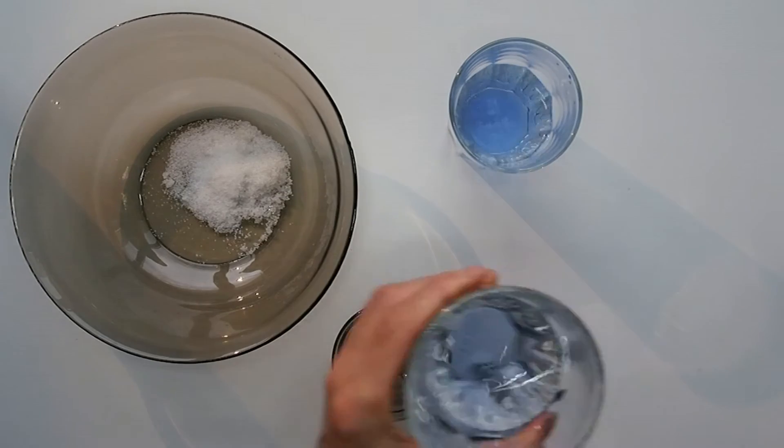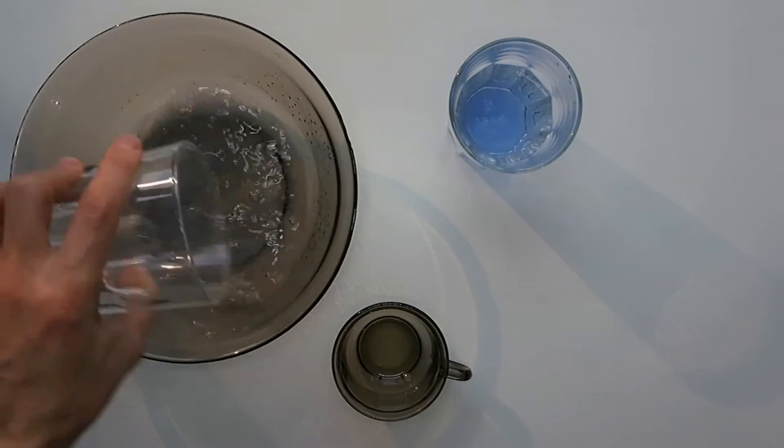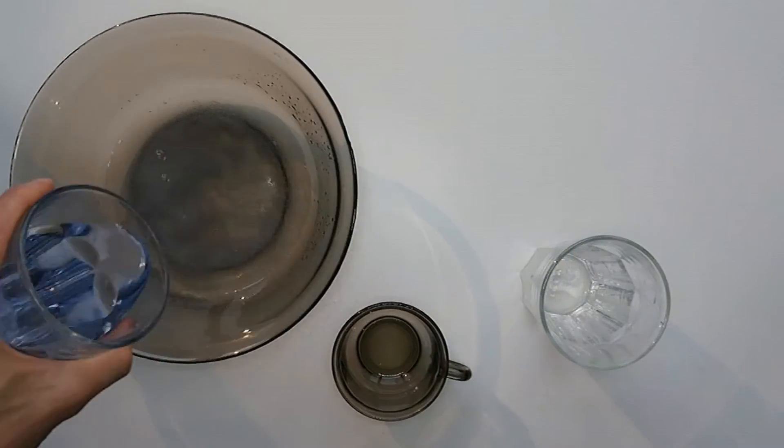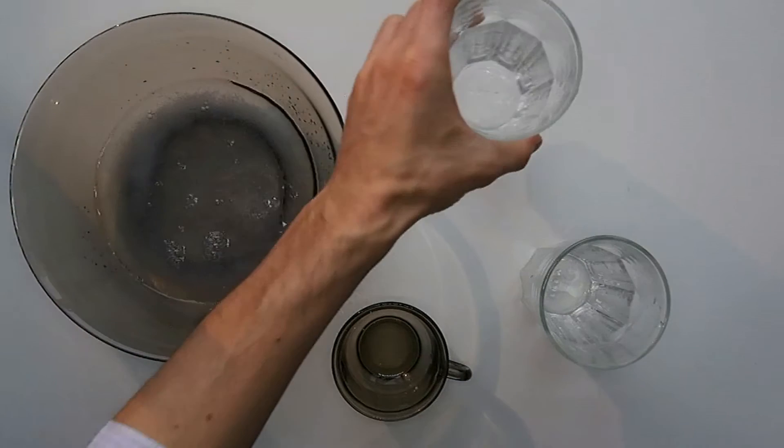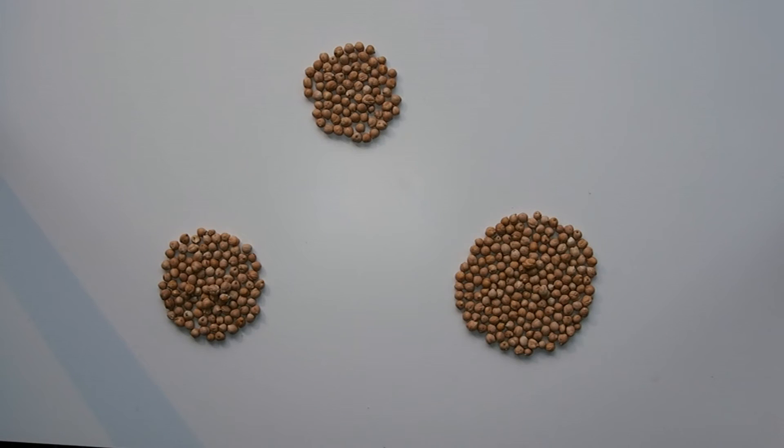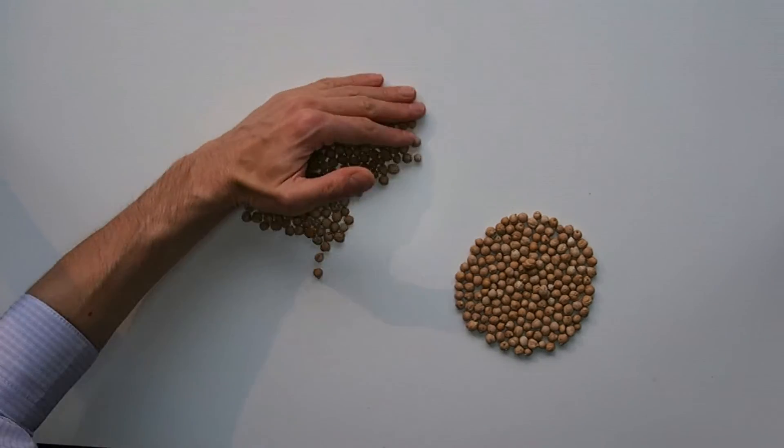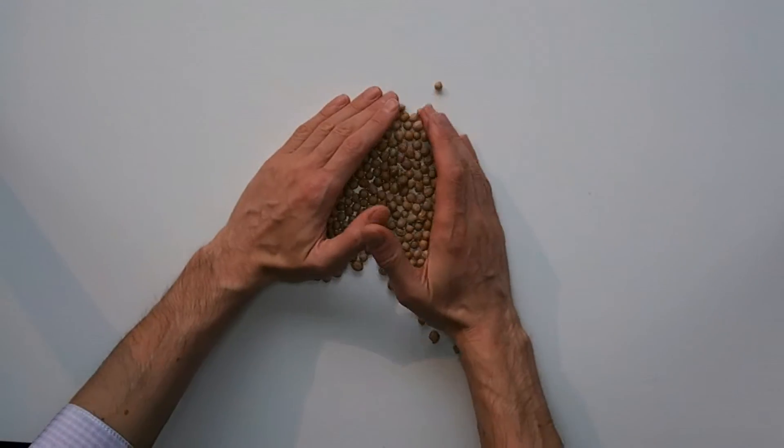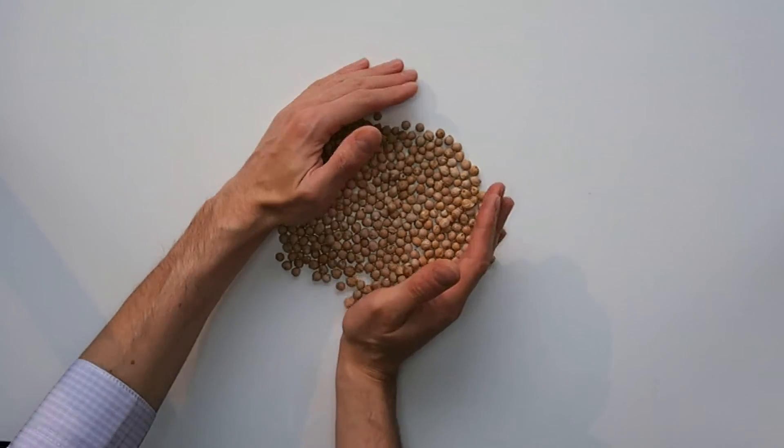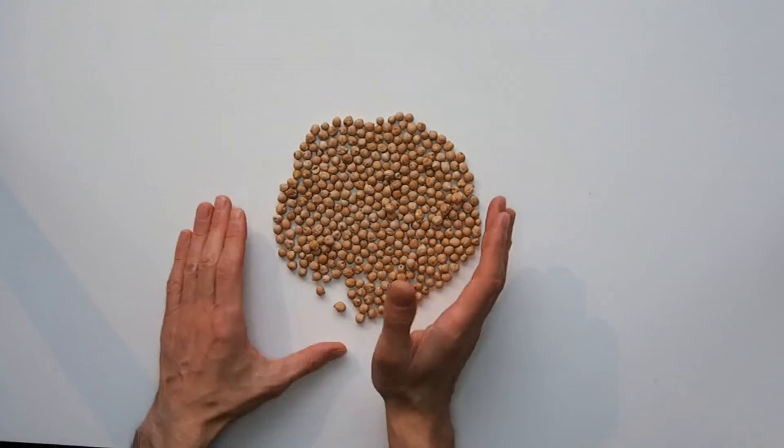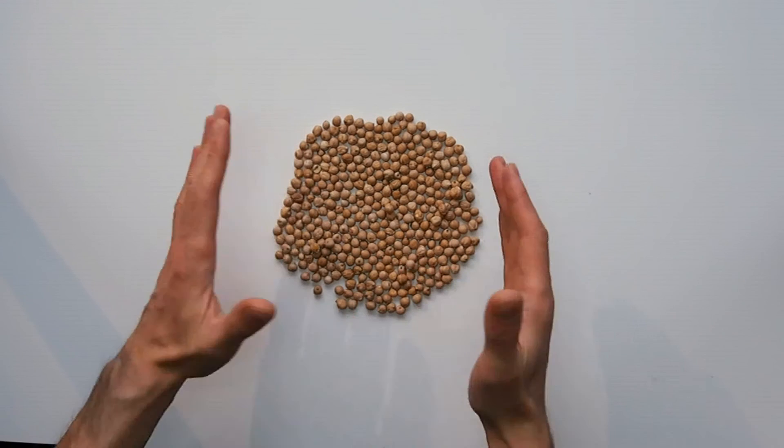Just mix them all up. Doesn't matter the order. That's addition. The same if we have three piles of chickpea seeds. Mix them all up, add them, and make a big pile of chickpea. That's addition.